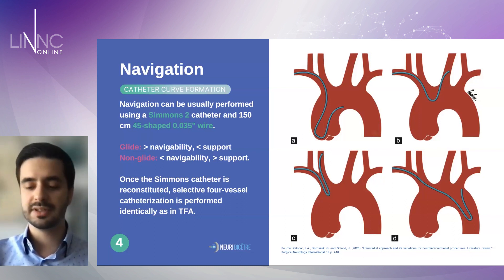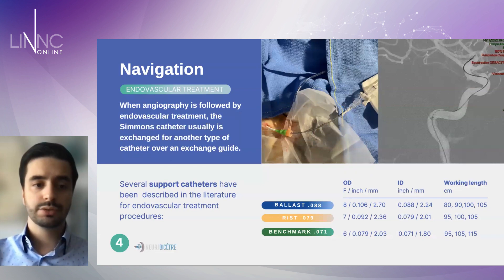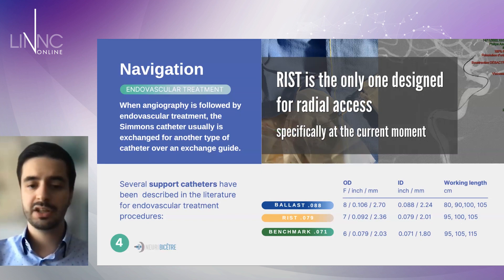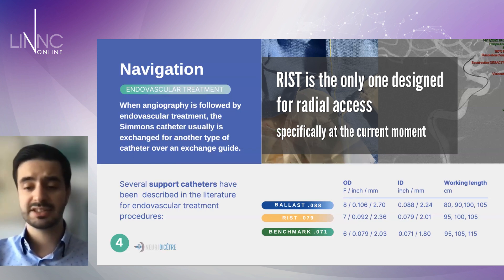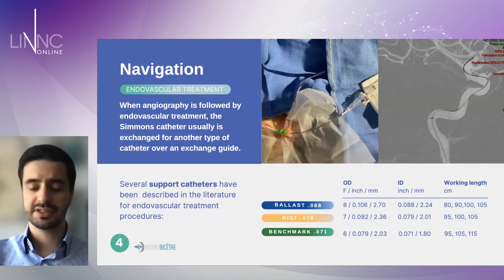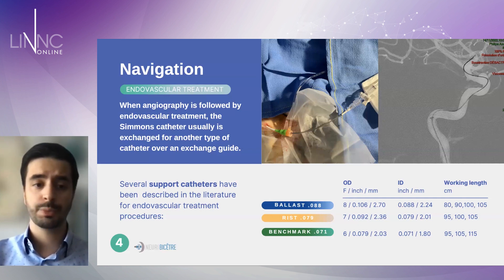If you need to perform a treatment — for example, treat an aneurysm or a thrombectomy — you might need a large support catheter. There are some support catheters that have been designed for radial access or that allow good catheterization via the radial artery, which you can find in these slides. Normally, this catheter is put in place with an exchange guide wire.